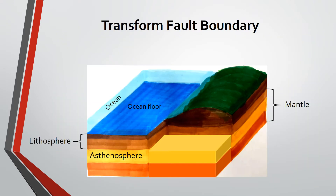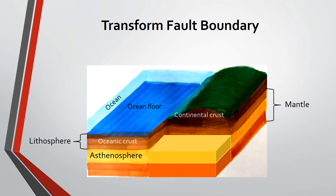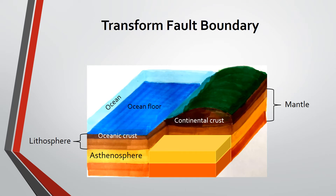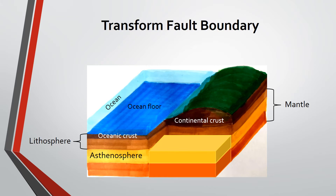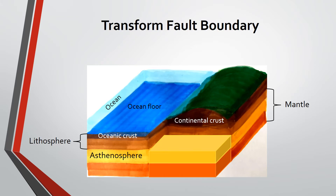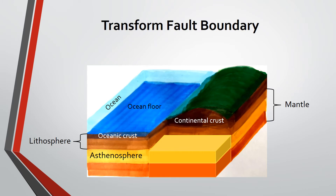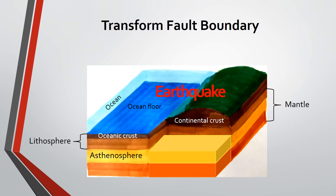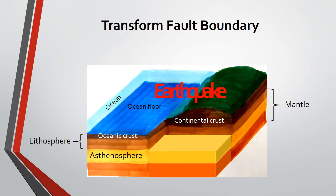Transform fault boundary is evident along the plates that are sliding past one another. This boundary is said to be conservative because it neither destroys nor creates crust. When lithospheric plates move around the highly viscous asthenosphere, some just grind against each other. However, this results in the occurrence of earthquakes. Transform faults could also be developed as a margin between spreading regions.